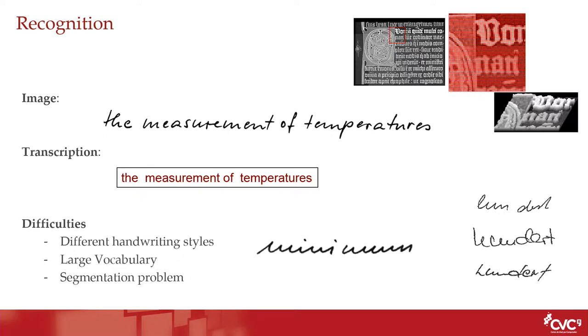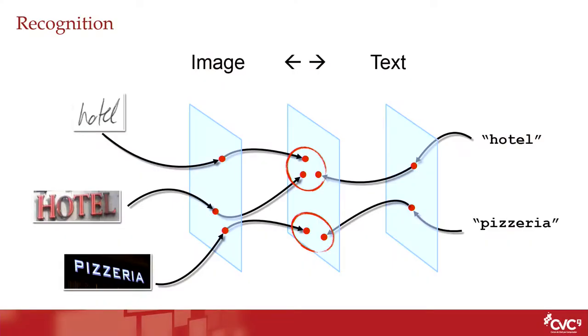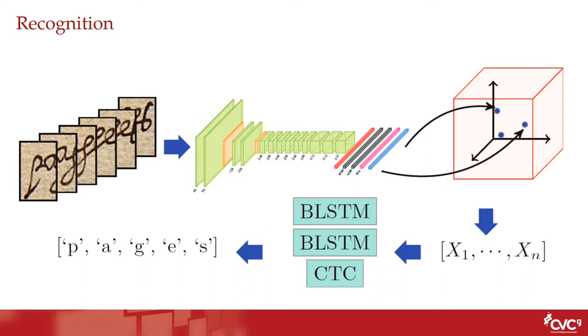For example, we have a handwritten text line, and from that I would like to recover the text behind it. This is not easy because there are many different variabilities in shape — not only in handwriting, but also in real life. We have to learn how to put these shapes into correspondence with text, the ASCII or TXT file. For doing this, we use deep learning. With a deep learning architecture, we can go from left to right reading the image and output the different characters in the text line.